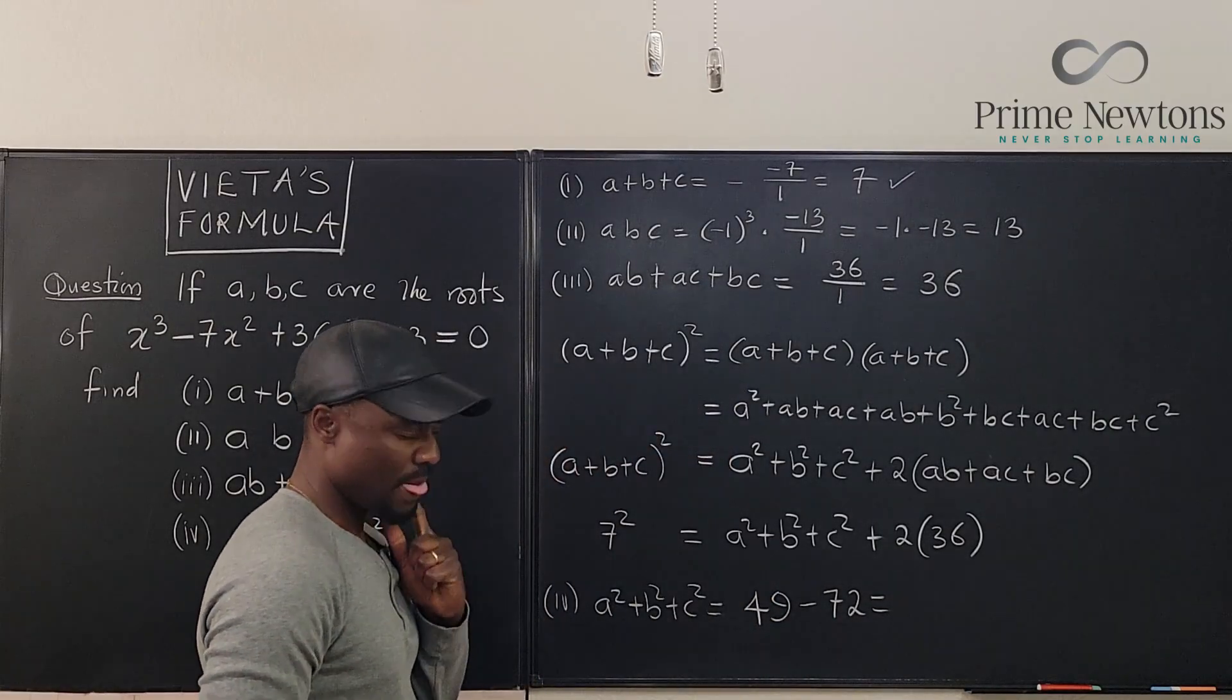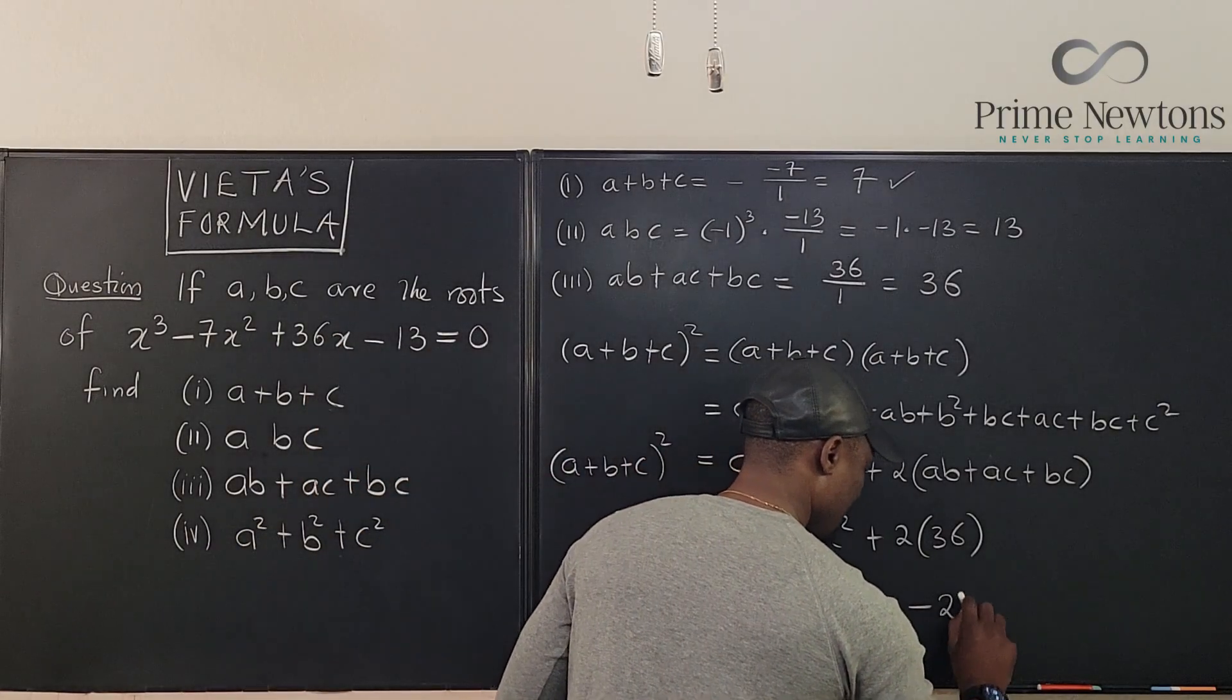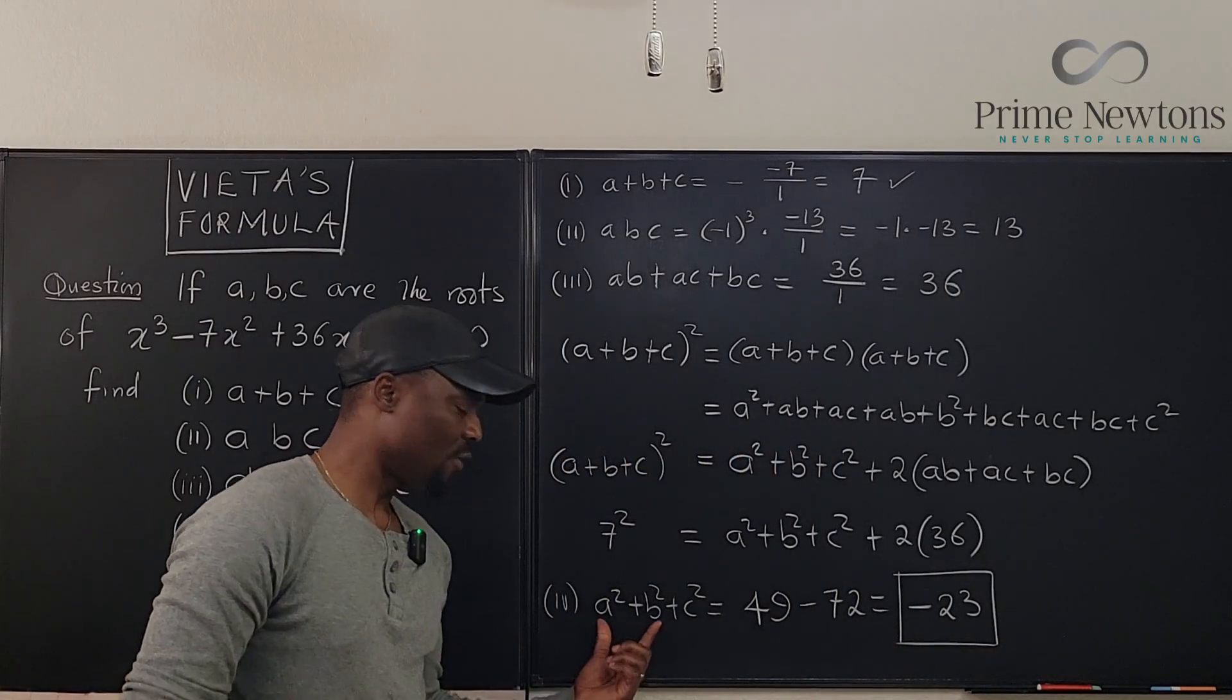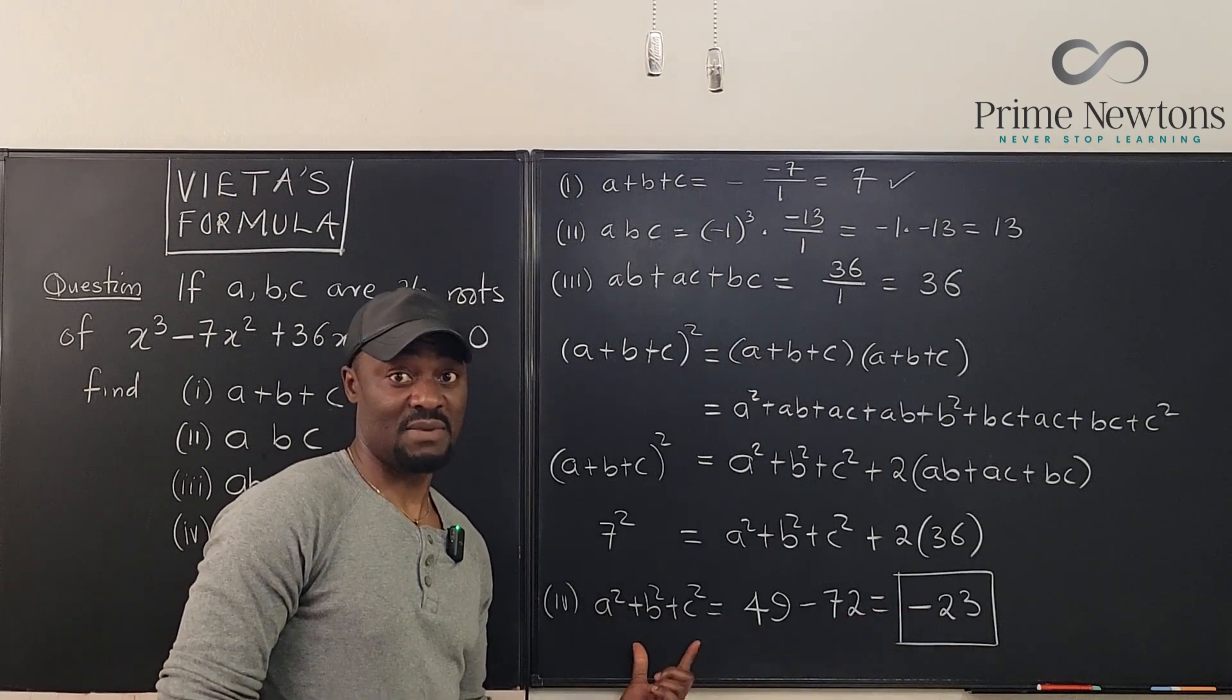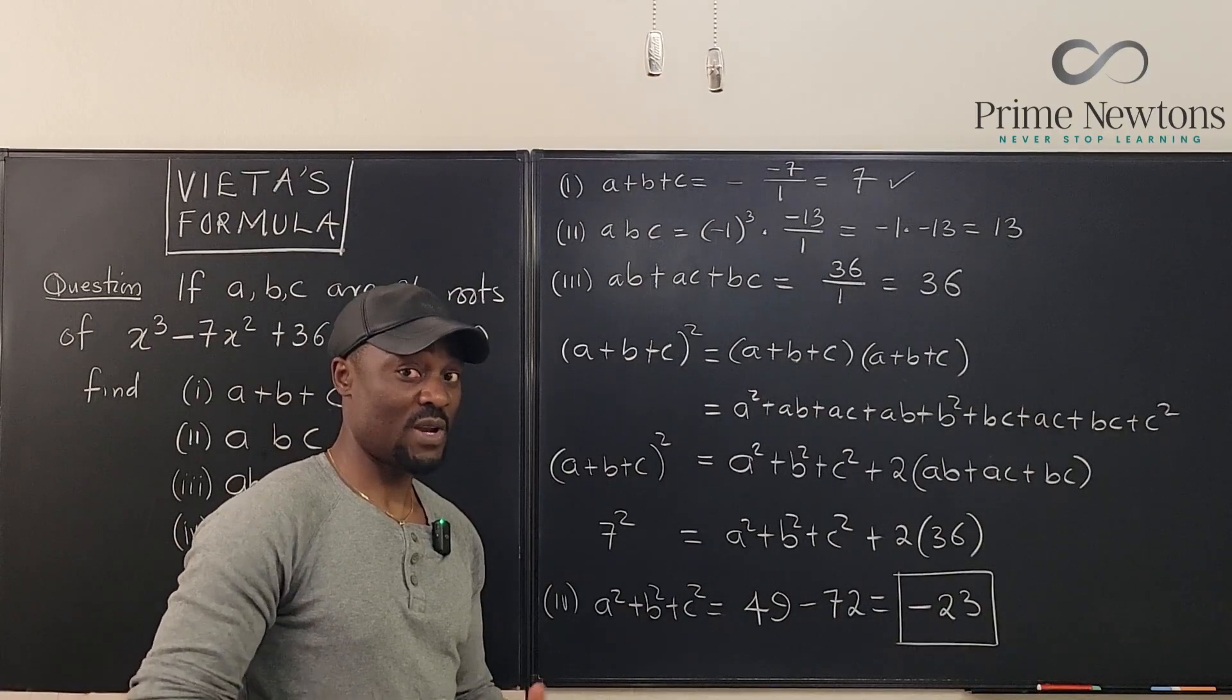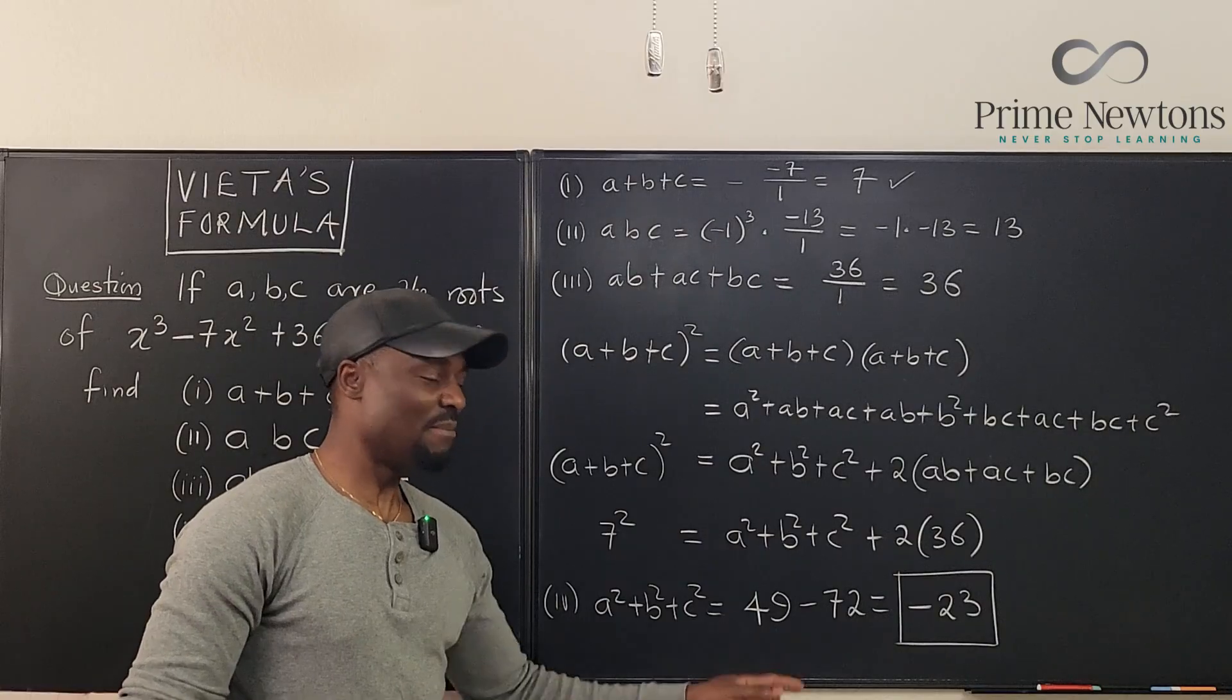So if we isolate this guy, number four, we're going to get A squared plus B squared plus C squared is equal to 49 minus 72. And that gives us minus 23. Now you might wonder, how could the sum of squares give you a negative? That means maybe these roots are not real. Remember, when you square an imaginary number, it turns negative. That must be the reason.